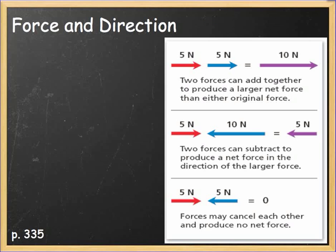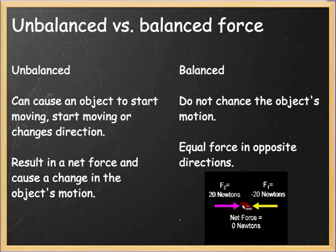Force and direction matter. This is on page 335 in your textbook. You can add forces together, they can subtract — meaning they can work against each other — or you may have a situation where they come together exactly equally to produce no net force. When you have those situations, you have what's called balanced or unbalanced. When you have an unbalanced force, that can cause an object to start moving, change direction, result in a net force, and cause a change in the object's motion — a start, a stop, or a change in direction.